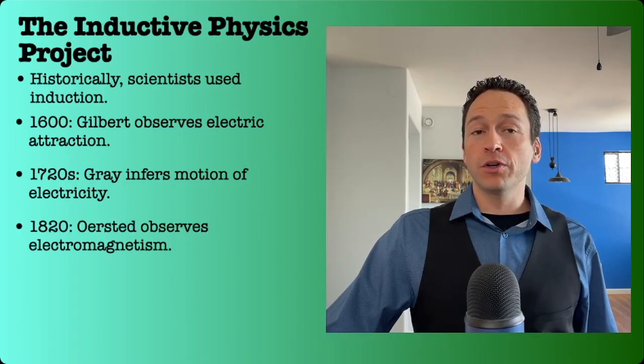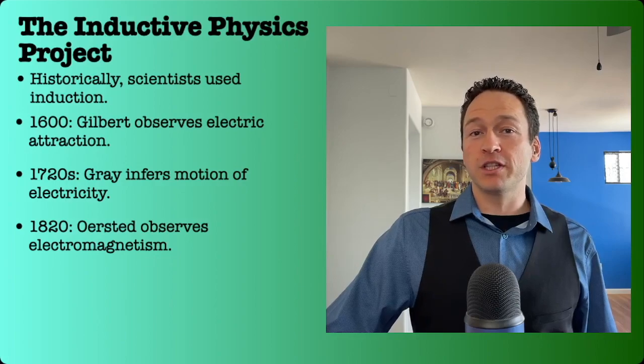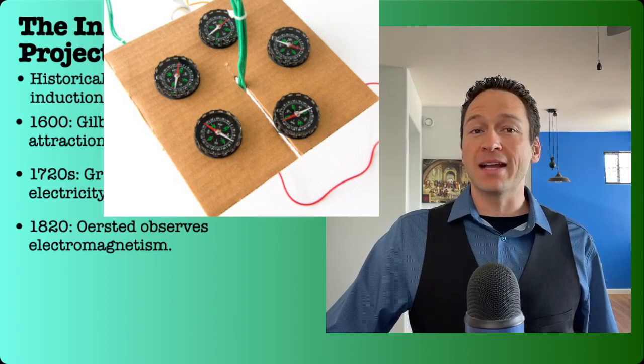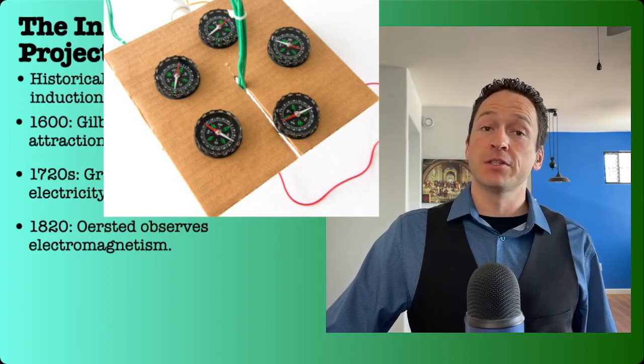In 1820, Orsted observed that when electricity moved through a wire in this same way, it exerted a magnetic force, causing compasses to turn.